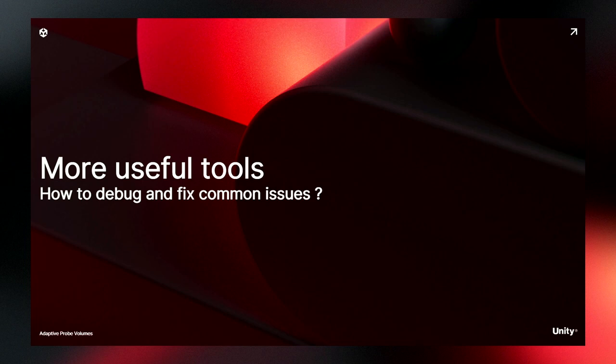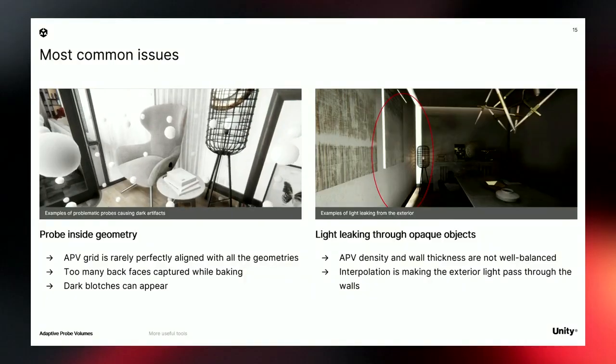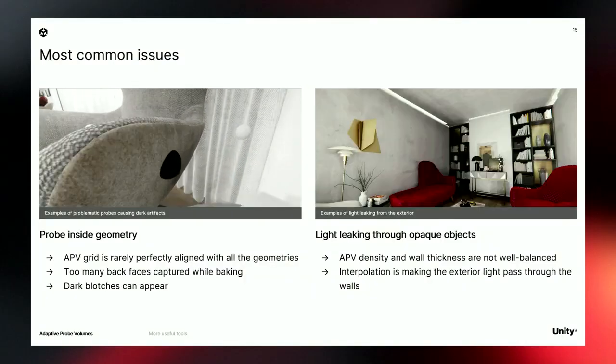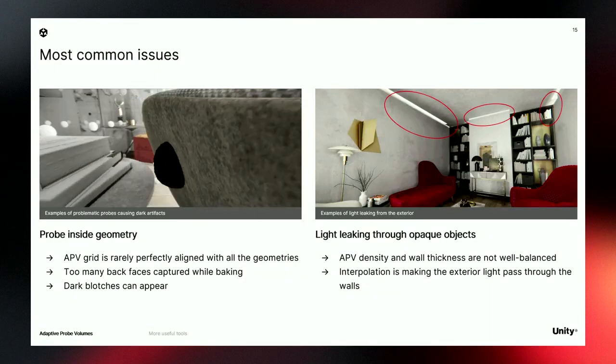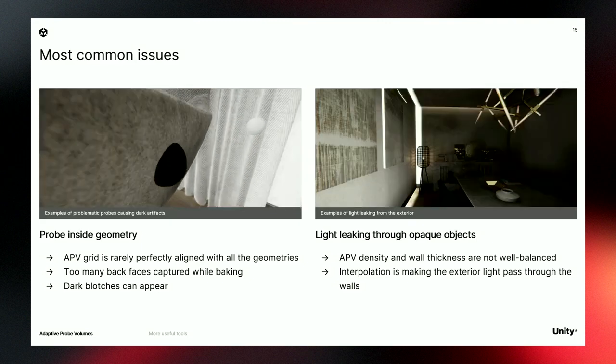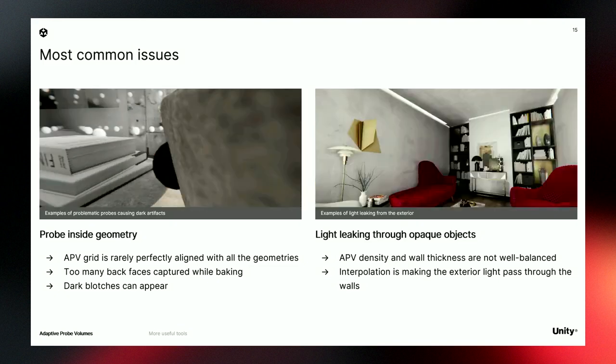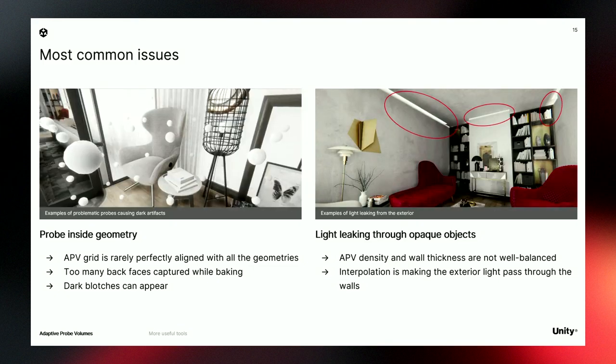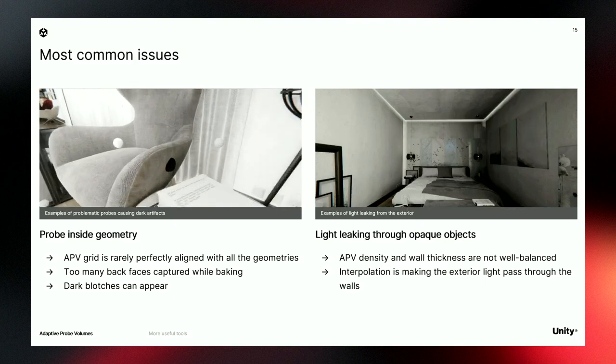Now let's take some time to look at how APV can be set up efficiently, what tools are available, and how to fix the most common issues. APV's grid is automatically generated, but the grid is regular and you cannot move a probe around. So a probe might end up inside geometry or not be completely aligned with a wall, resulting in dark stains on the wall or light leaking when light from the exterior comes into the interior.